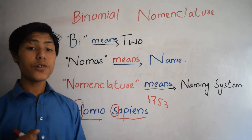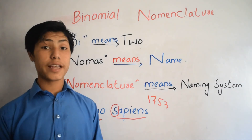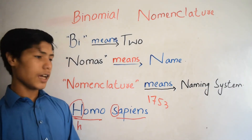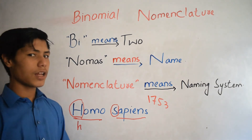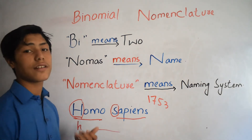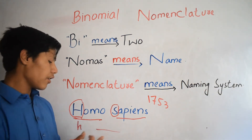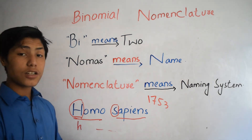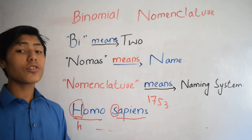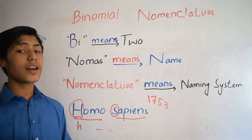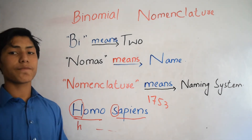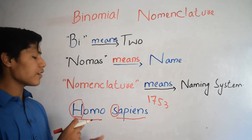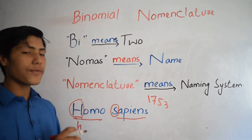And the last rule states that no two organisms have the same scientific name. For example, if we were to give the name homo sapiens to a lion, the fifth rule states that no two organisms can have the same scientific name. Therefore, only humans are given homo sapiens.